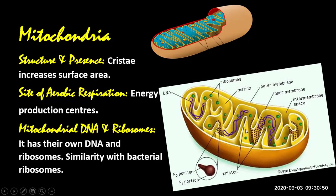Allah has created the inner membrane with infoldings to increase the surface area of reactions taking place on it. Inside the inner membrane, there is a fluid-like thing called the mitochondrial matrix. In that fluid, ribosomes and DNA are floating — this is mitochondrial DNA and mitochondrial ribosomes.